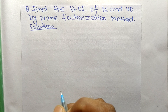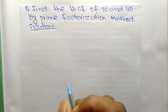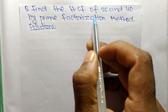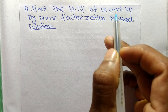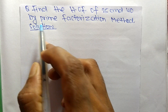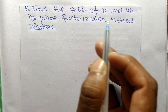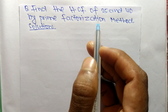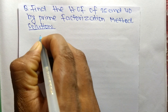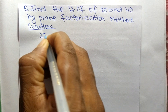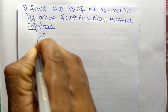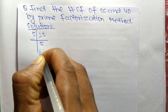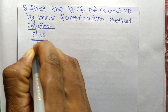Today in this video we shall learn to find the HCF of 25 and 40 by prime factorization method. First we find out the prime factors of 25, so it is 5 times 5, meaning 25.